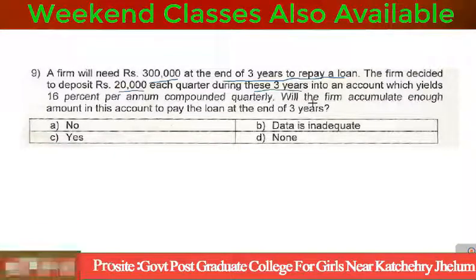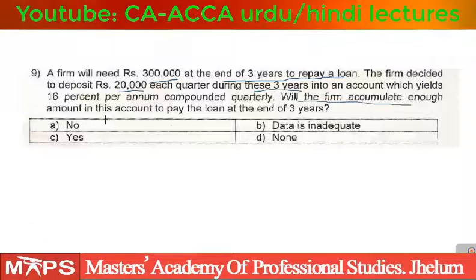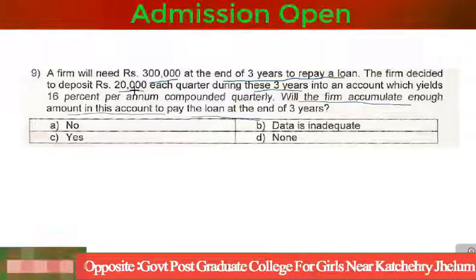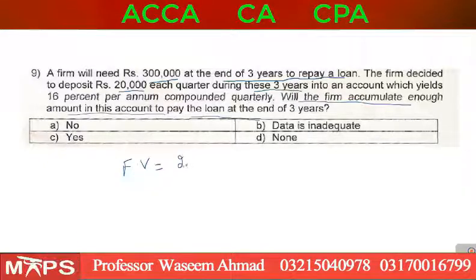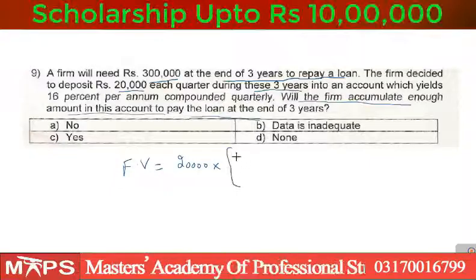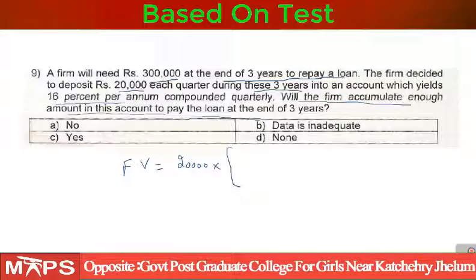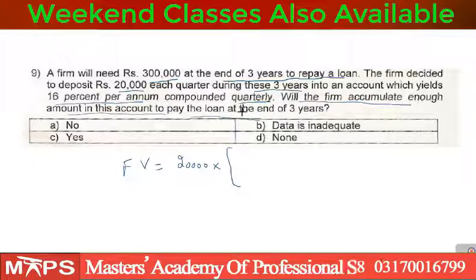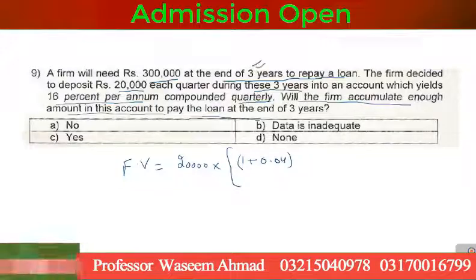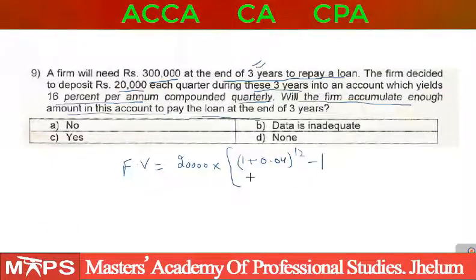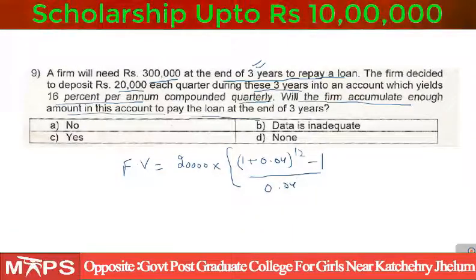The amount per deposit is 20,000. The question asks: will the firm accumulate enough to pay the loan? We find the future value of 20,000 per quarter. The interest rate is 16% per annum, compounded quarterly, so per quarter R = 4% (0.04). Formula: FV = 20,000 × [(1 + 0.04)^12 − 1] / 0.04, since 3 years × 4 quarters = 12 periods.